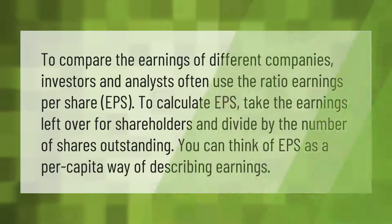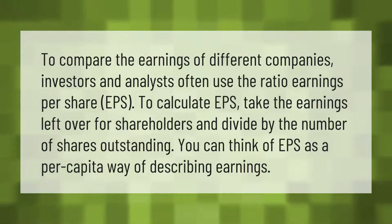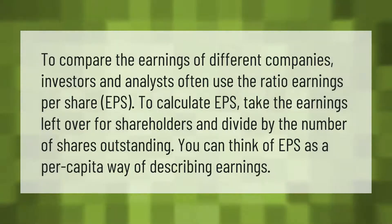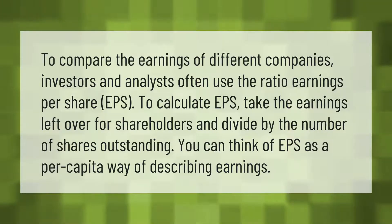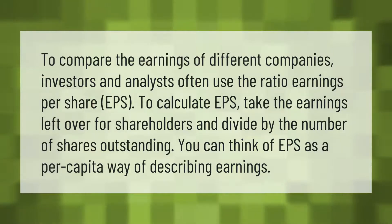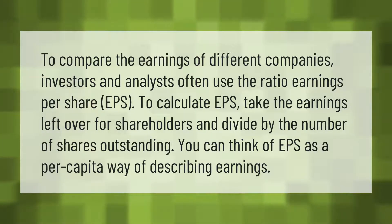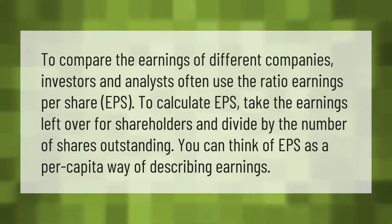To compare the earnings of different companies, investors and analysts often use the ratio earnings per share, or EPS. To calculate EPS, take the earnings left over for shareholders and divide by the number of shares outstanding. You can think of EPS as a per capita way of describing earnings.